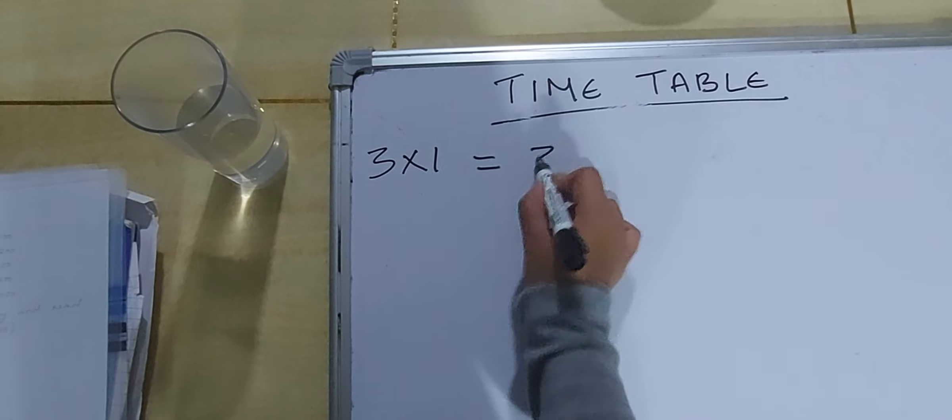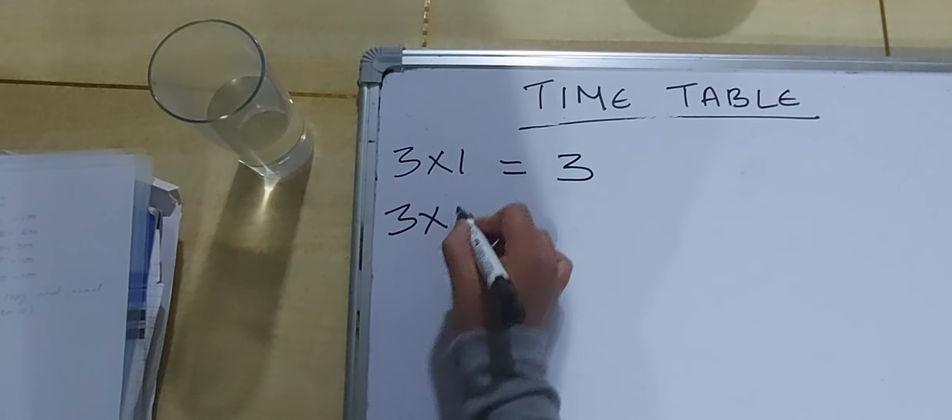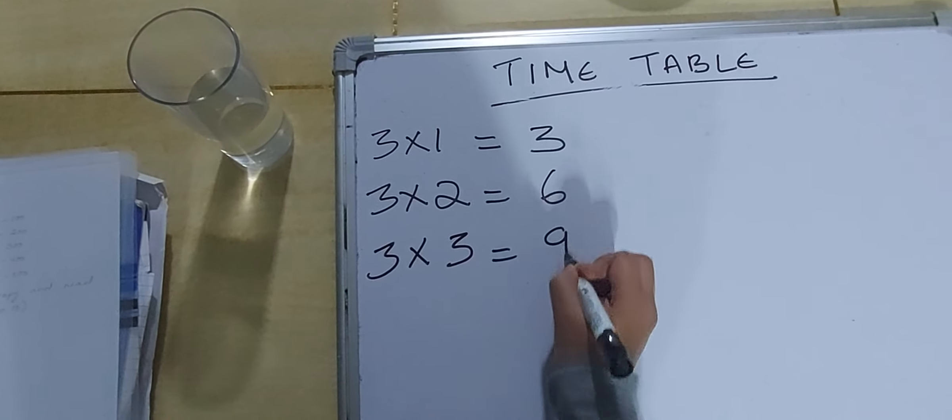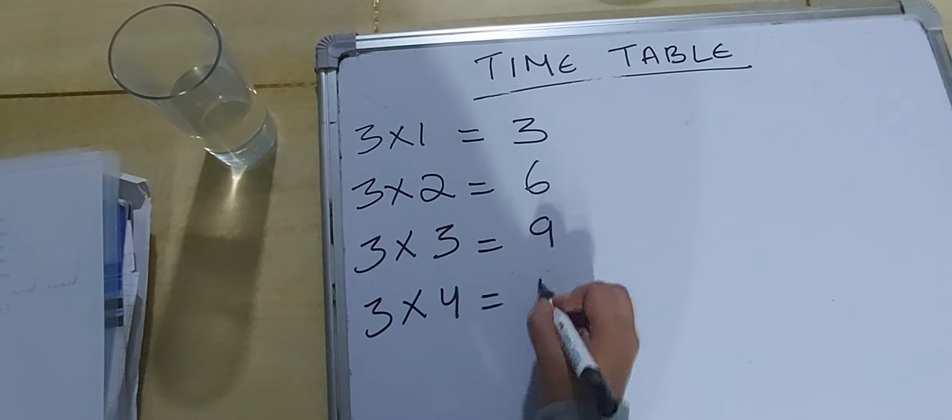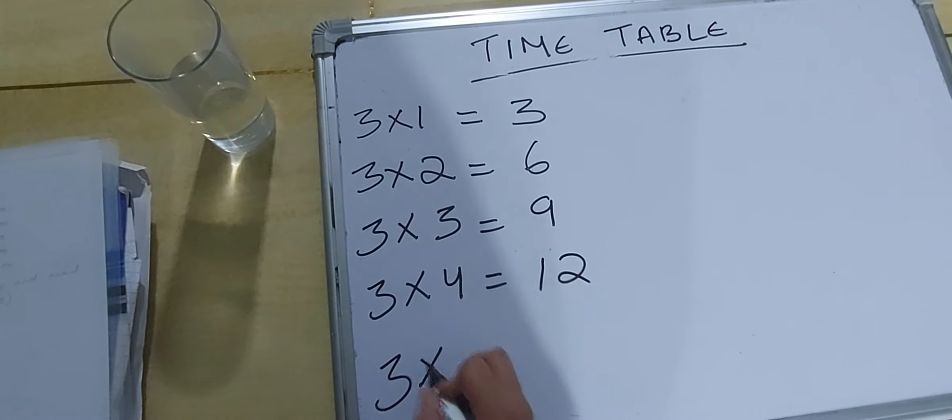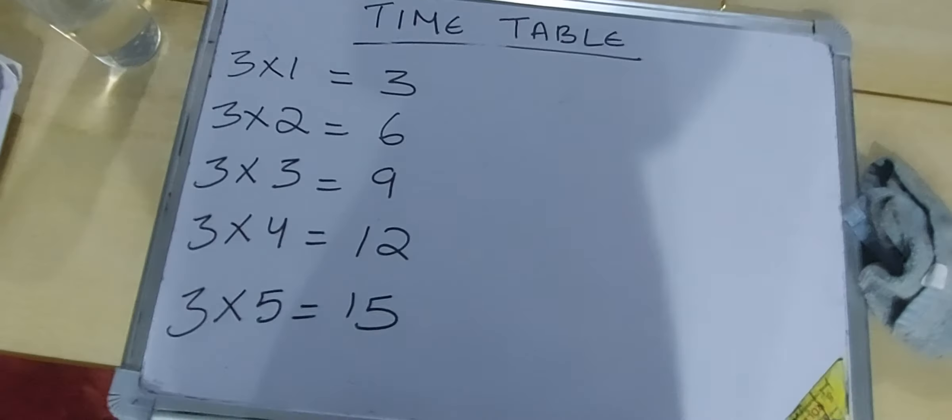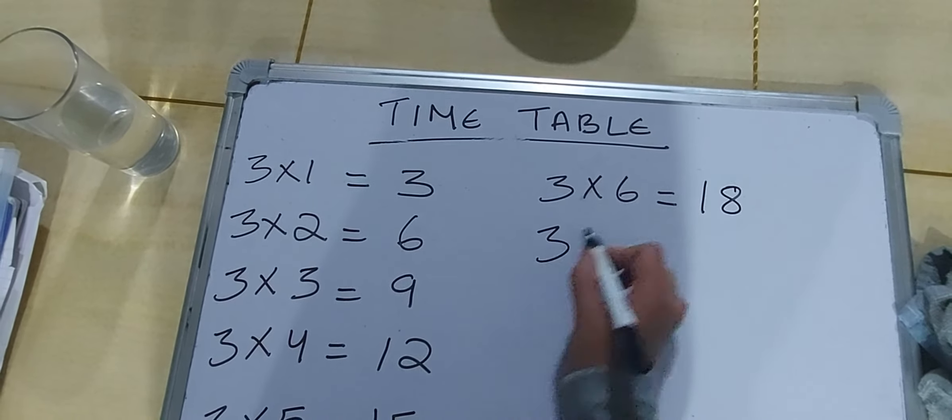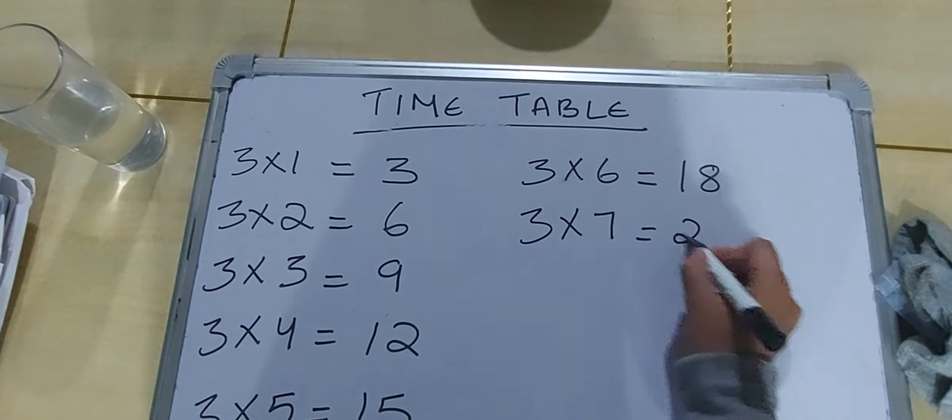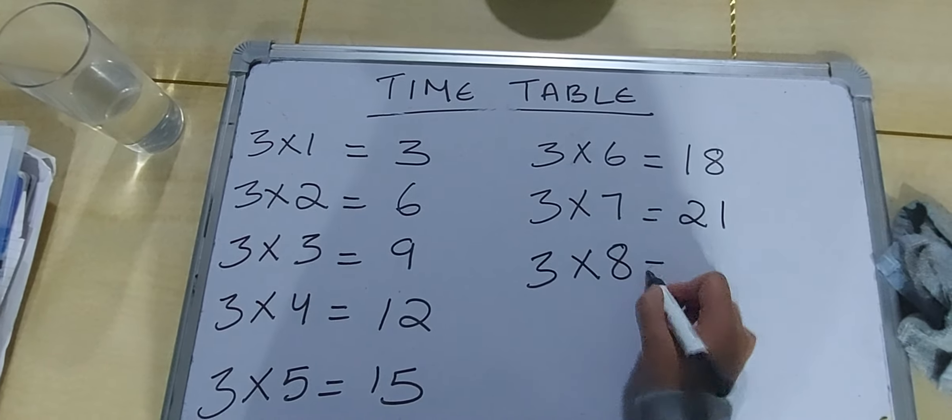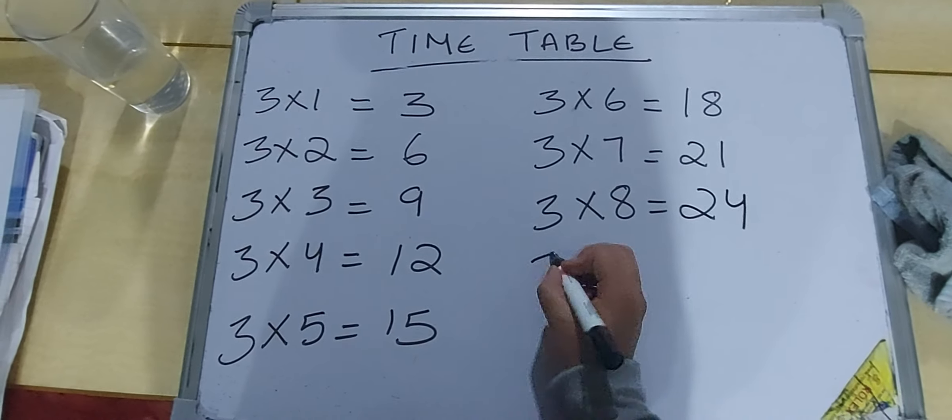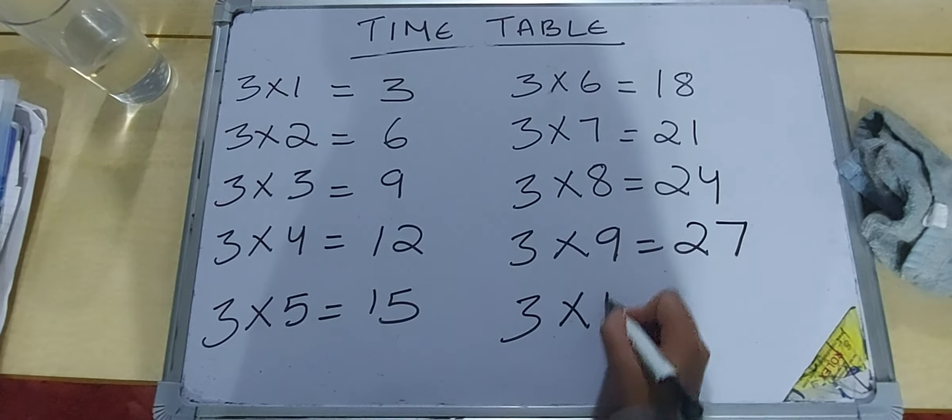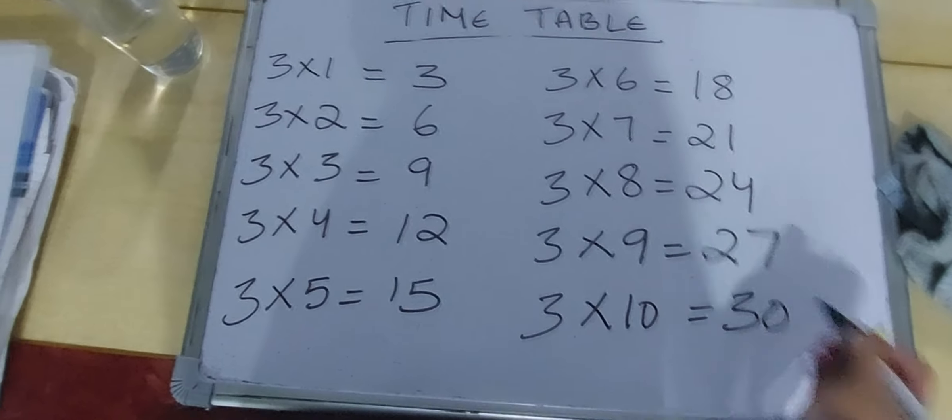Three twos are six. Three threes are nine. Three ones is three. Three fours are twelve. Three fives are fifteen. Three sixes are eighteen. Three sevens are twenty-one. Three eights are twenty-four. Three nines are twenty-seven. Three tens are thirty.